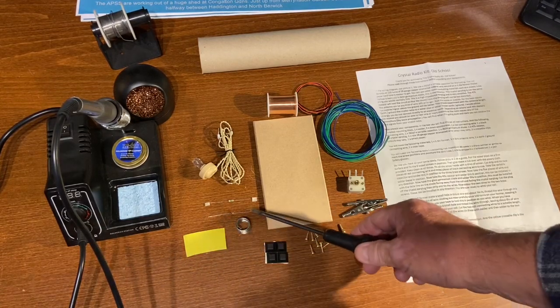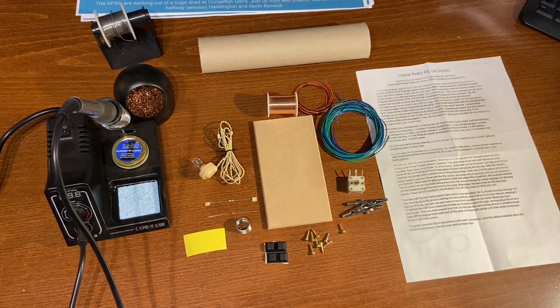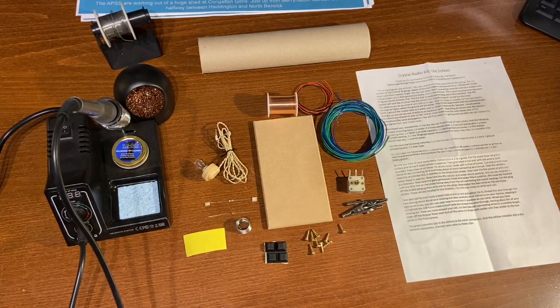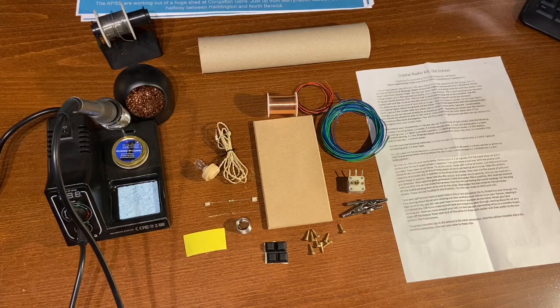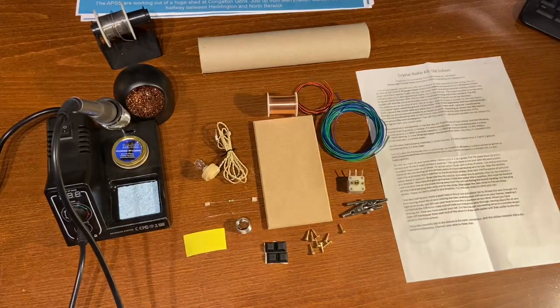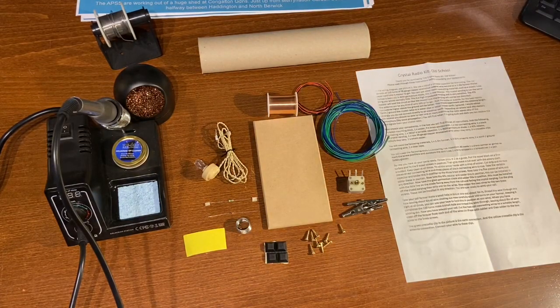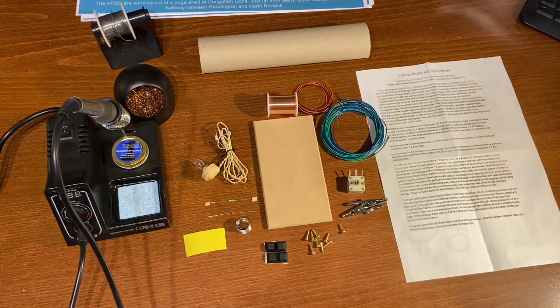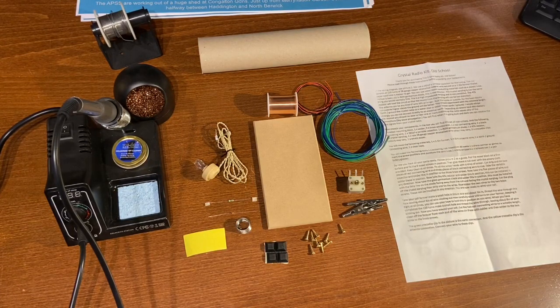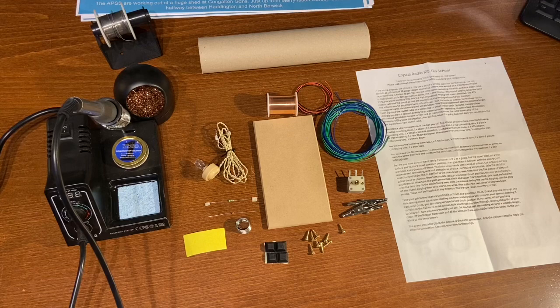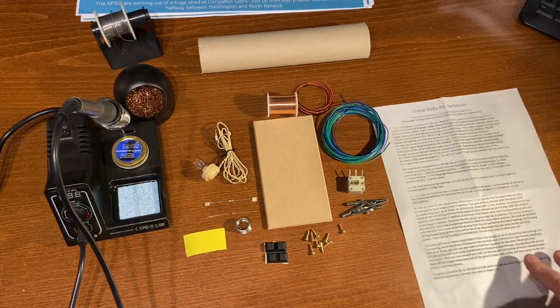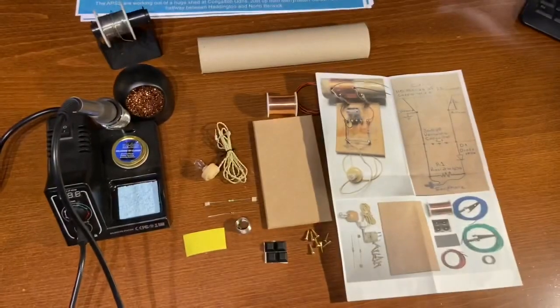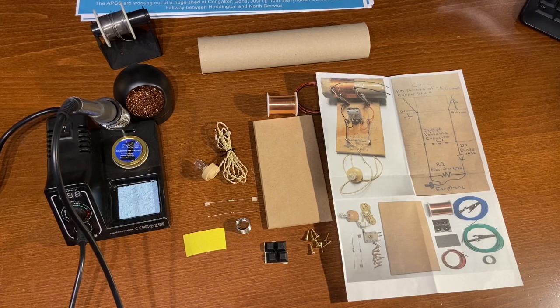A diode and a resistor that will be going into the circuit, and of course an earpiece so that I can hear the radio stations, hopefully. Up here we have the internal tube out of kitchen roll that I've just finished, because that is what this enameled wire is going to be wound around. And of course we have the instructions that come with it. The supplier has very kindly even included some pictures to help with the building of this project.